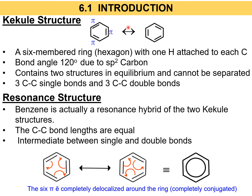For further explanation about the Kekulé structure — it is basically a six-membered ring hexagon with one hydrogen attached to each carbon atom. At every corner of the hexagon, there is a carbon atom. We know that a carbon atom must have four covalent bonds. Since the double bonds are alternating, each carbon atom has three covalent bonds from the ring. Therefore, each carbon atom will have one hydrogen to complete its fourth covalent bond. So all carbons in the benzene ring have exactly one hydrogen atom.